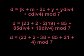So where you can understand the formula correctly, here is the solution. D equals 23 plus 2 minus 2 times 19 plus 85 plus 85 div 4 plus 19 div 4 modulo 7. D equals 23 plus 2 minus 38 plus 85 plus 21 plus 4 modulo 7.